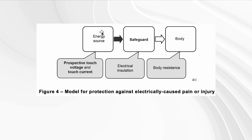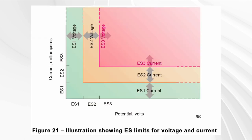The IEC standard provides us with this simple diagram. There's an energy source — and here we're only going to look at electrical sources — and safeguards, typically electrical insulation but not the only type, as we will see. The safeguard prevents the energy source from reaching the body, or at least from reaching it above certain limits.